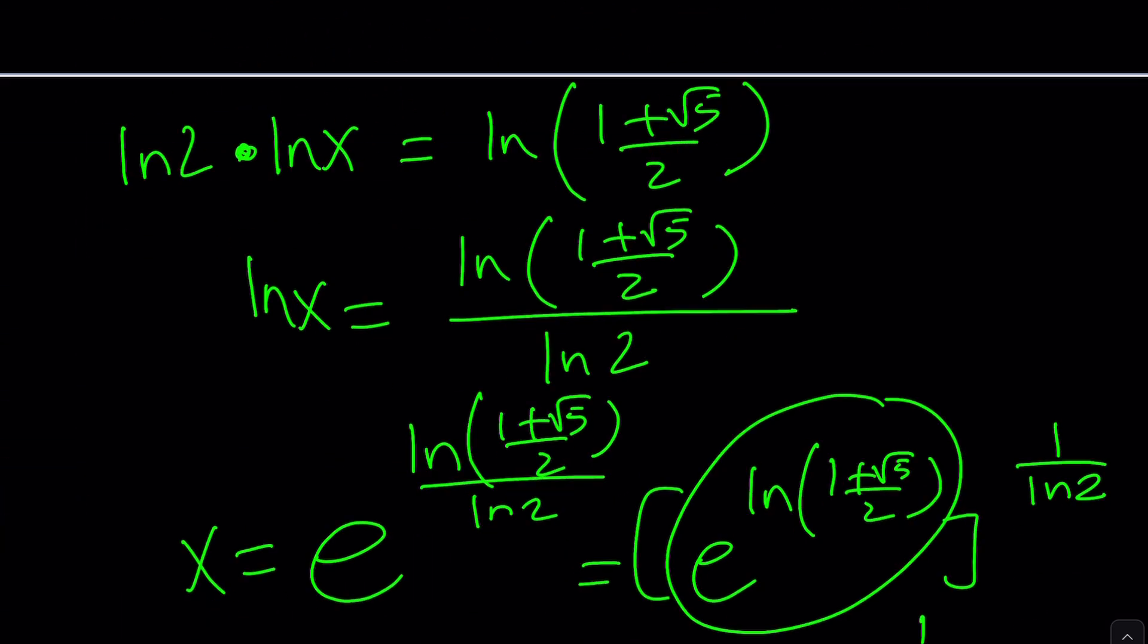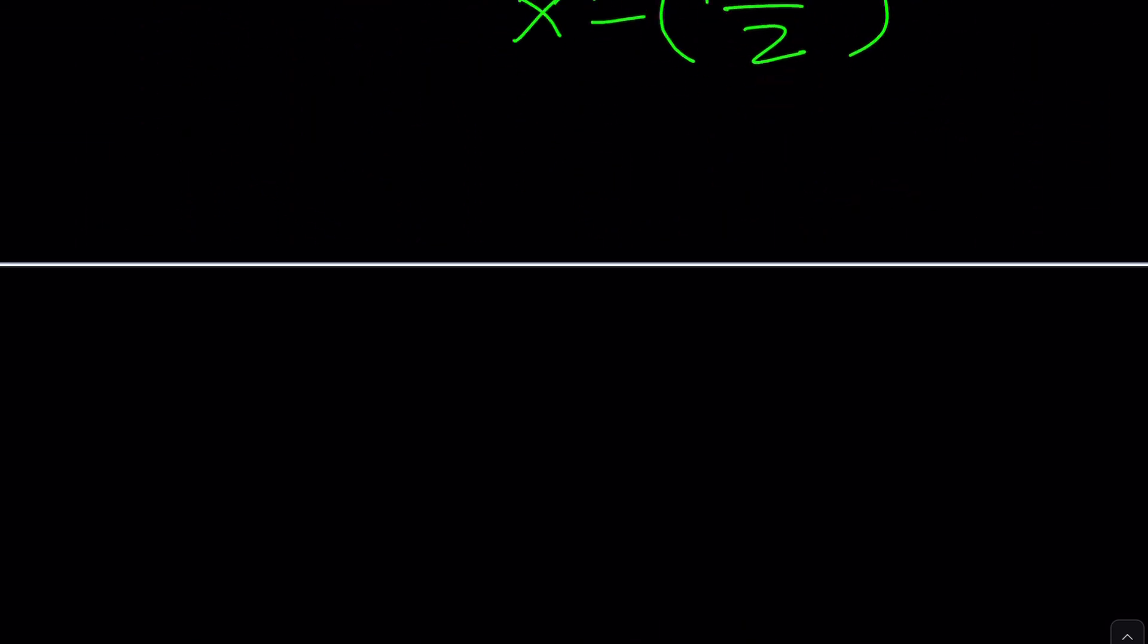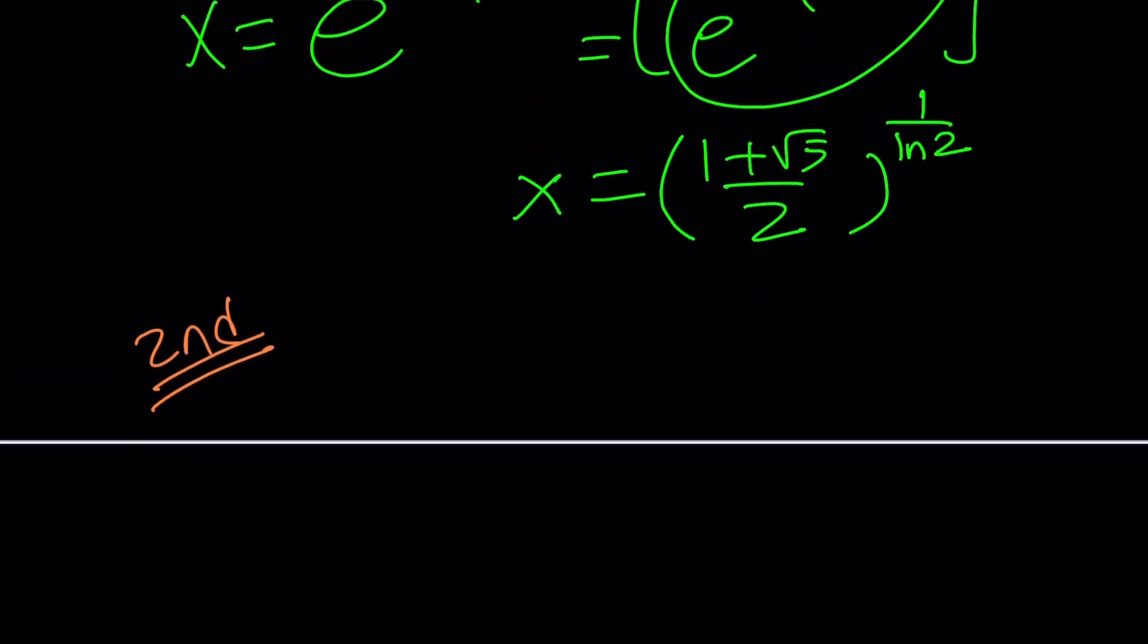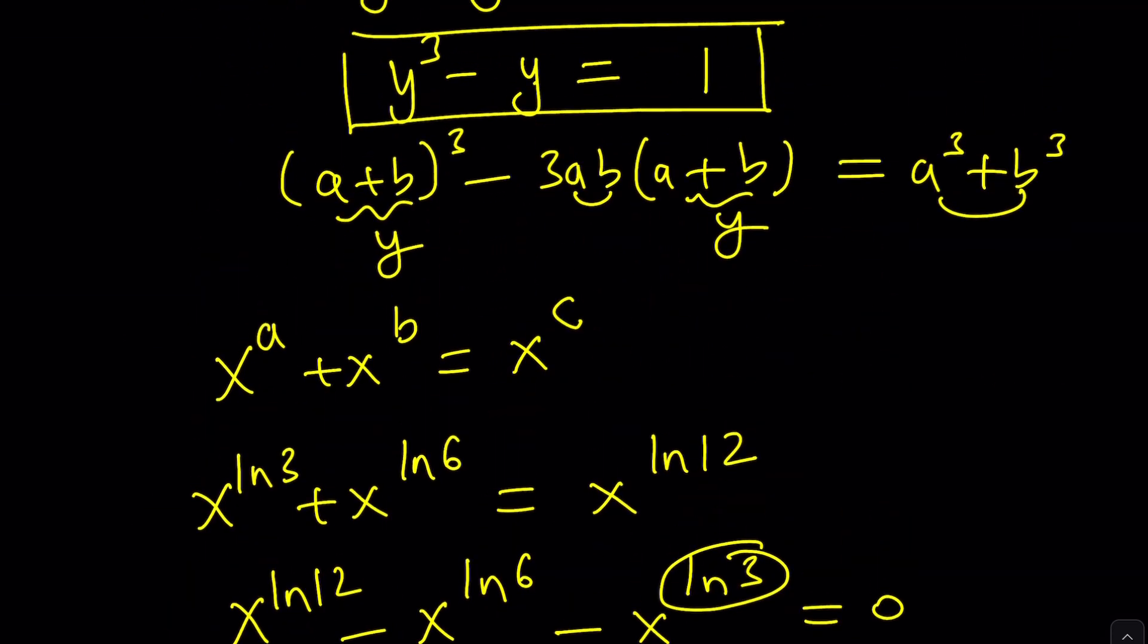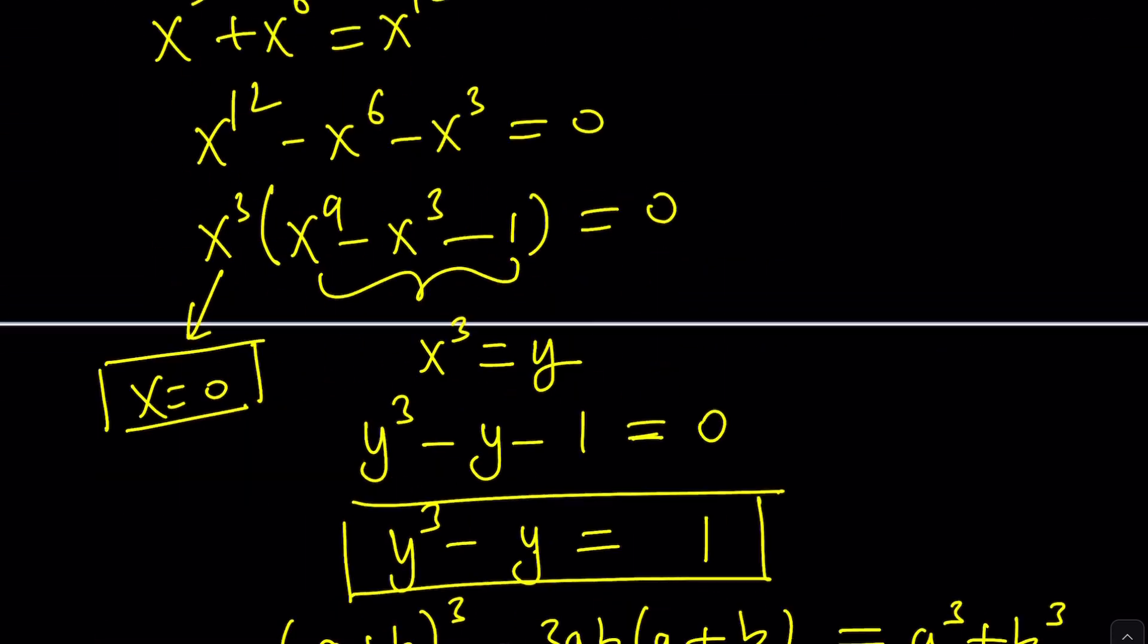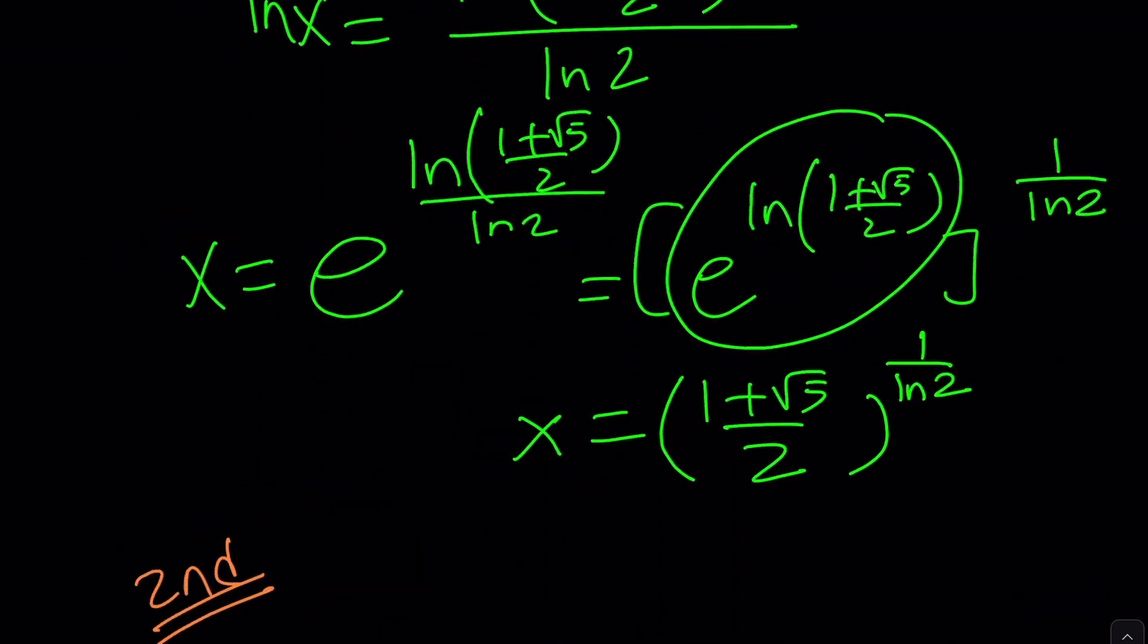Great. So let's take a look at the second method because I think this wasn't my initial plan, but it seems to be working. So why not use it? So let's go back to the original problem, x to the power ln 3, 6, and 12. So it's going to look like this.